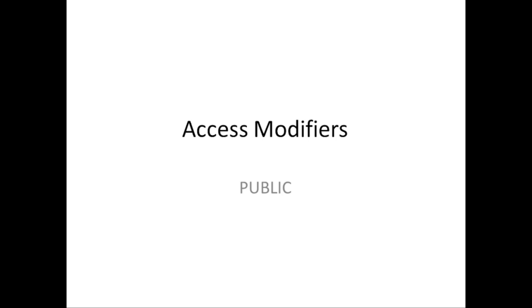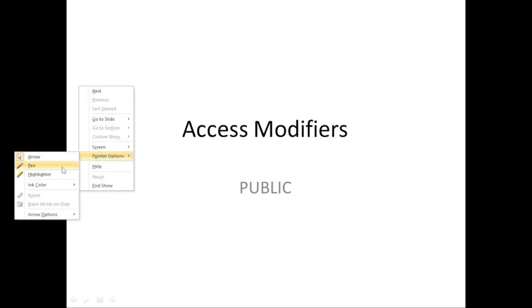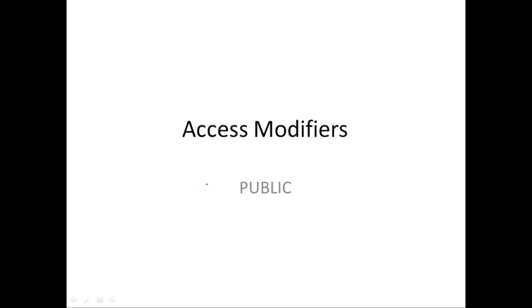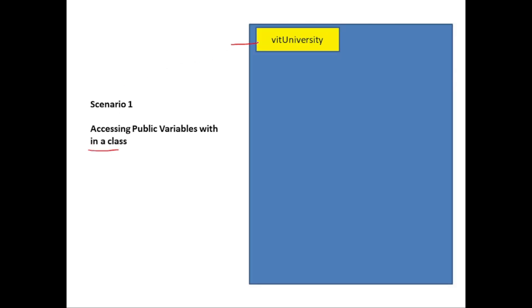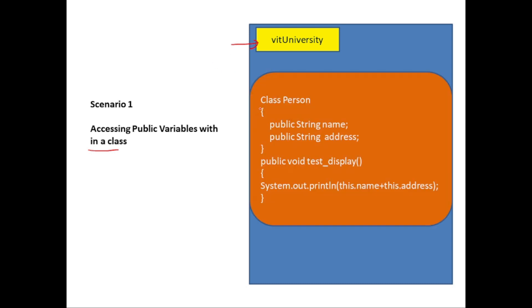So let's move to the demonstrations straight away. We'll start with understanding each of the access modifiers one by one, starting with the public access modifier first. We'll understand the behavior of public access modifier using various scenarios. The first scenario is about accessing public variables — variables that have the access modifier defined as public — within a class. So we are going to create a package called VIT University, and inside the package we'll have this class Person with two variables of type String and the access modifier specified as public.